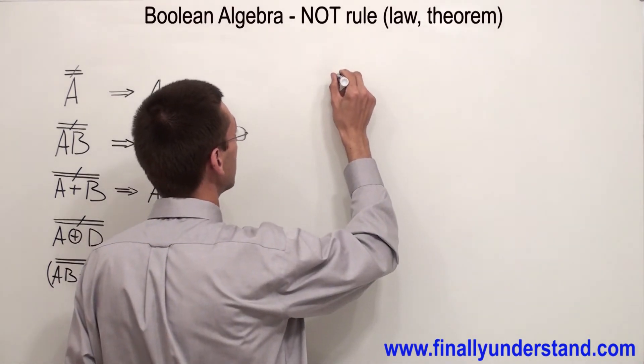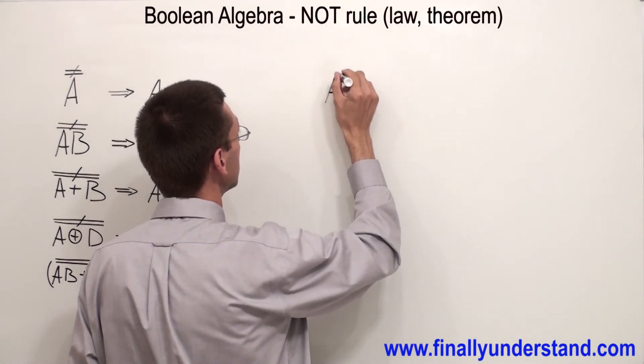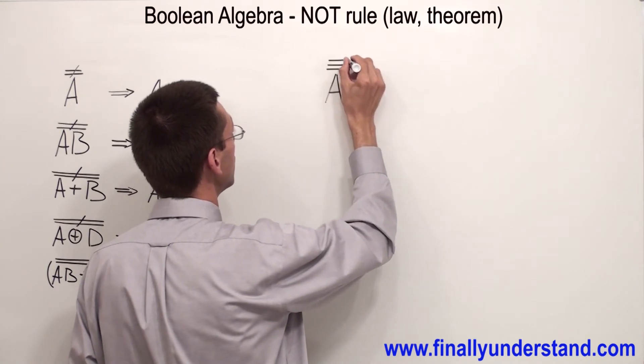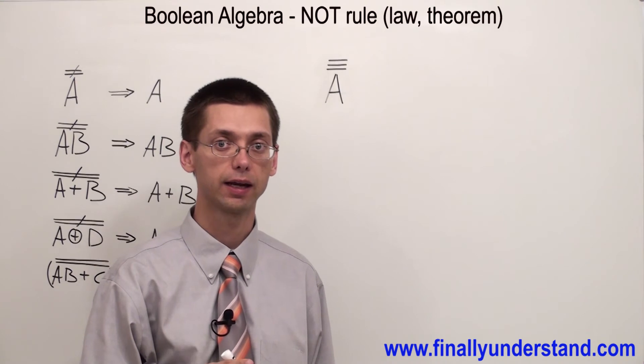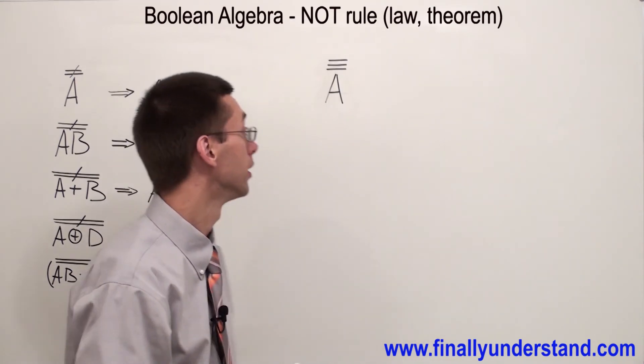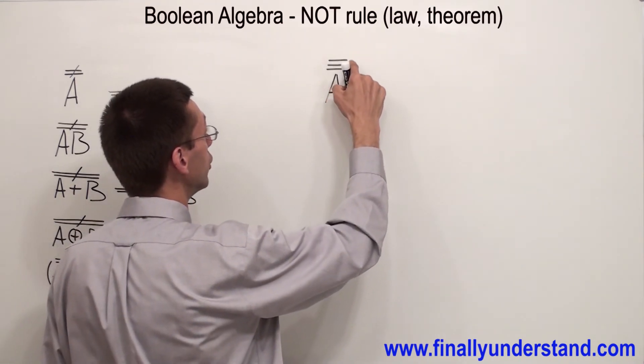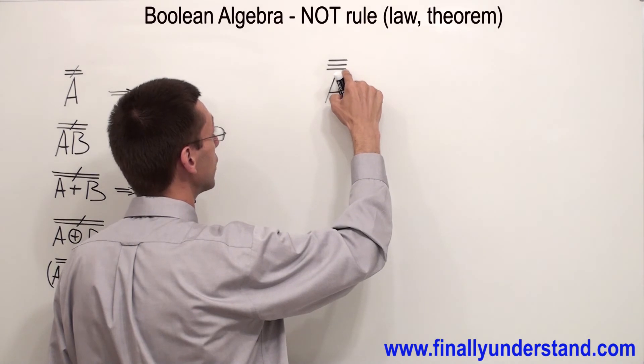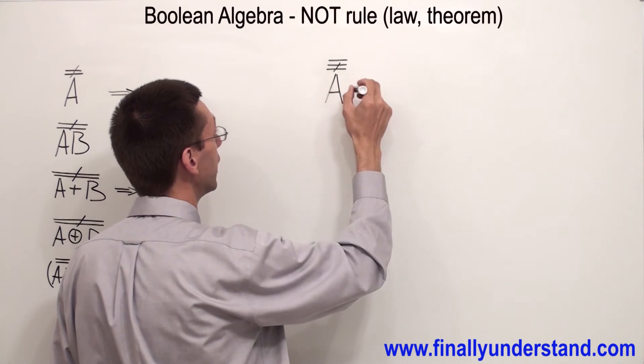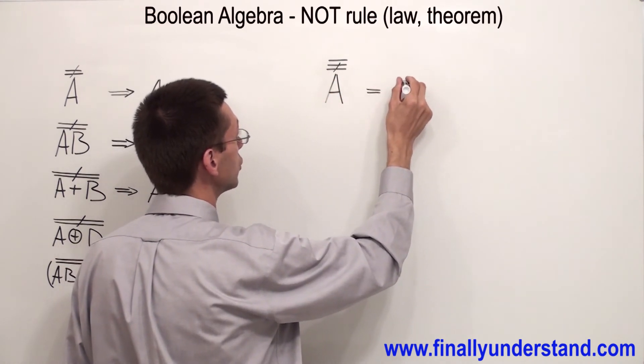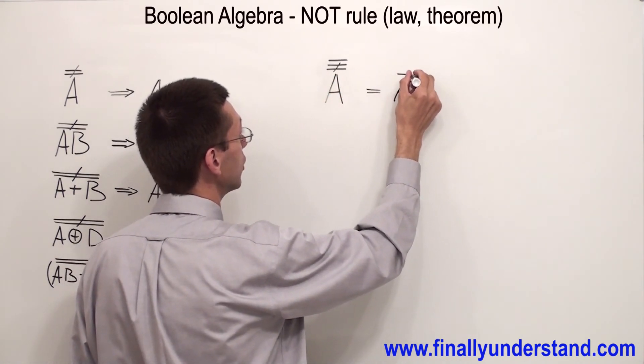We have A with one, two, three bars. You have to remember that one bar can cancel only one bar. So if I have three bars, this bar cancels this one. I can cancel just two bars, and the answer is going to be just A not.